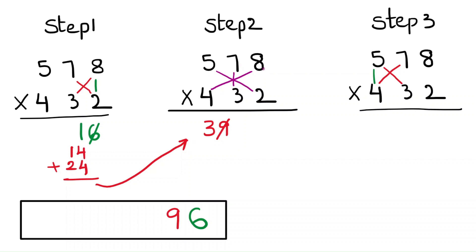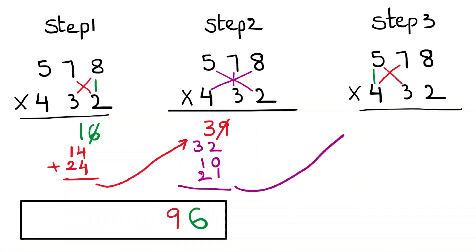The cross multiplication gives: 8 times 4 is 32, 5 times 2 is 10, and 7 times 3 is 21. Write the answer — the total will be 66. Cross the last digit 6 and write it in the final answer.